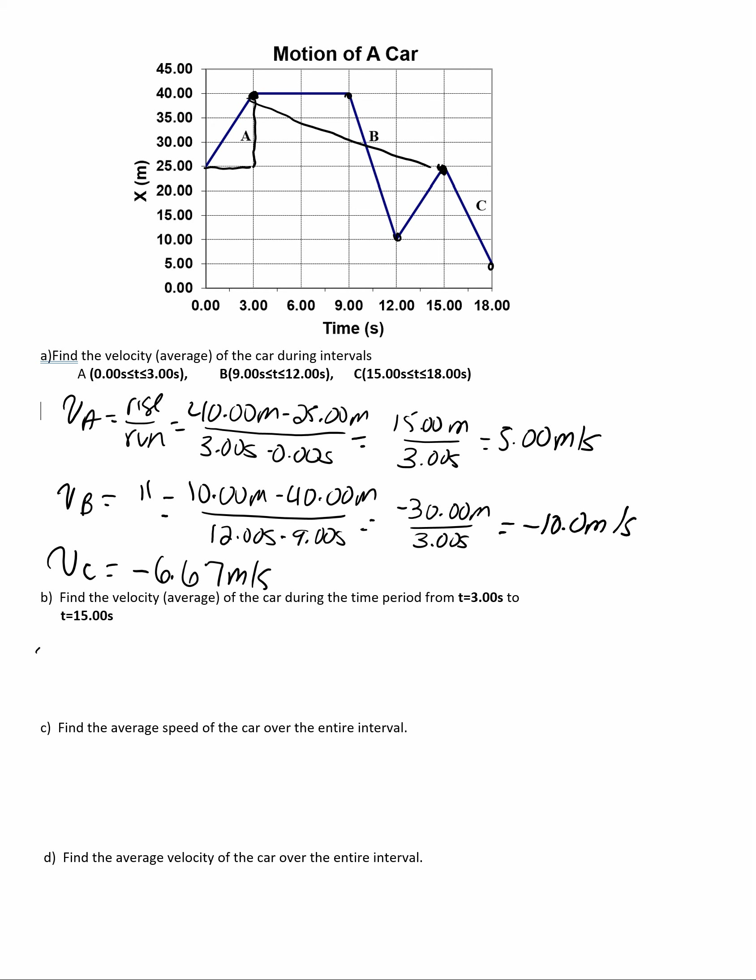All we need is the slope of the line between those two points. So, the velocity, which is an average between 3 seconds and 15 seconds, rise over the run again. 25 meters minus 40 meters over 15 seconds minus 3 seconds.